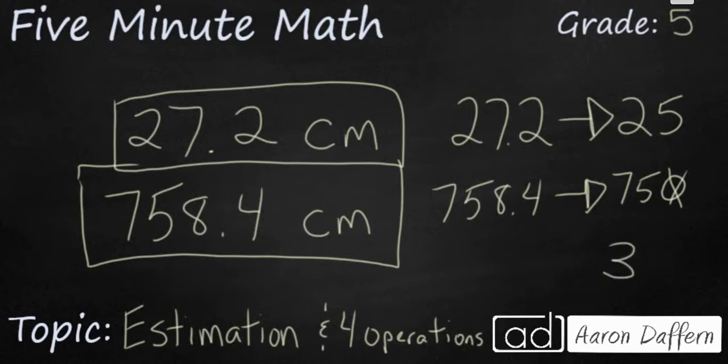But since that is going to be 750, we're going to have to add that zero back in. So it's going to be 30. So you rolled your ball about 30 times farther, because 25 times 30 is going to be 750, and that's really close to the numbers we used.